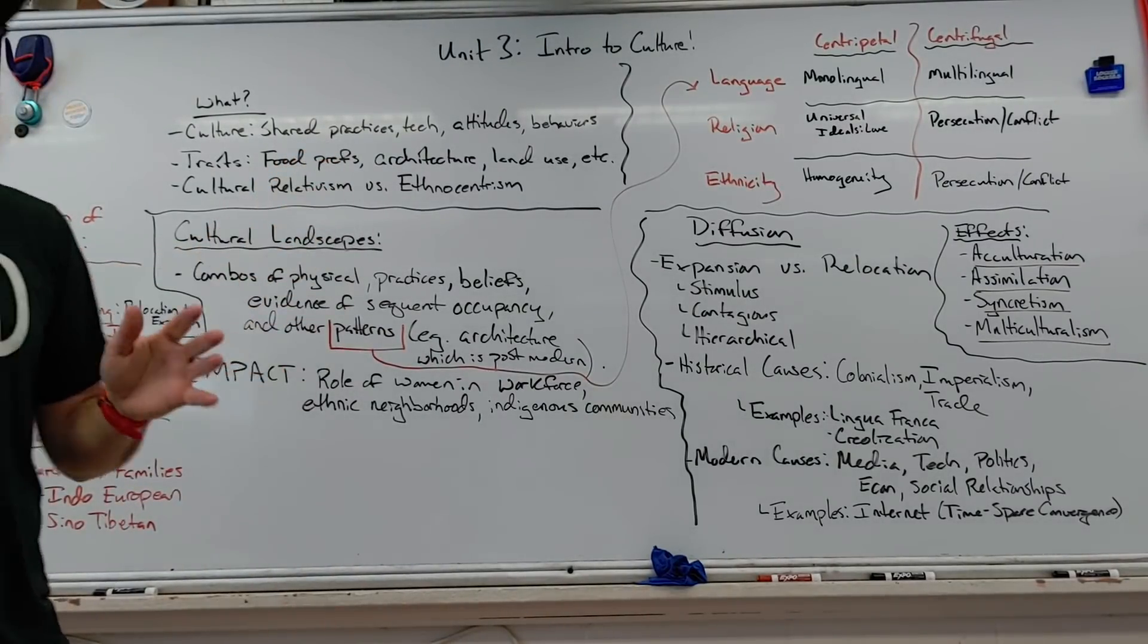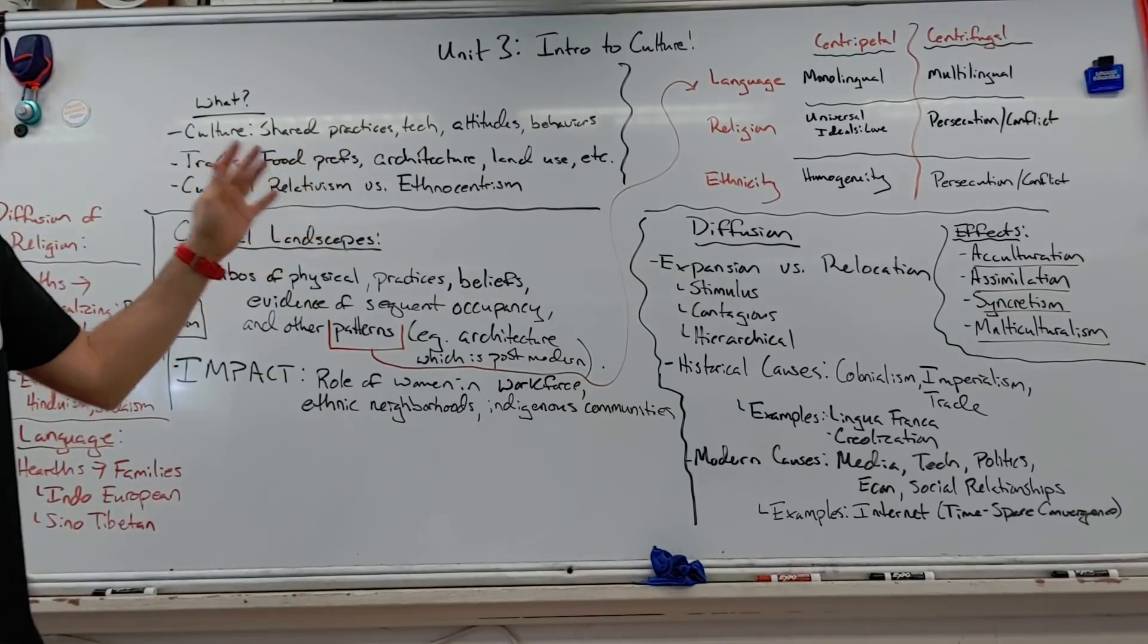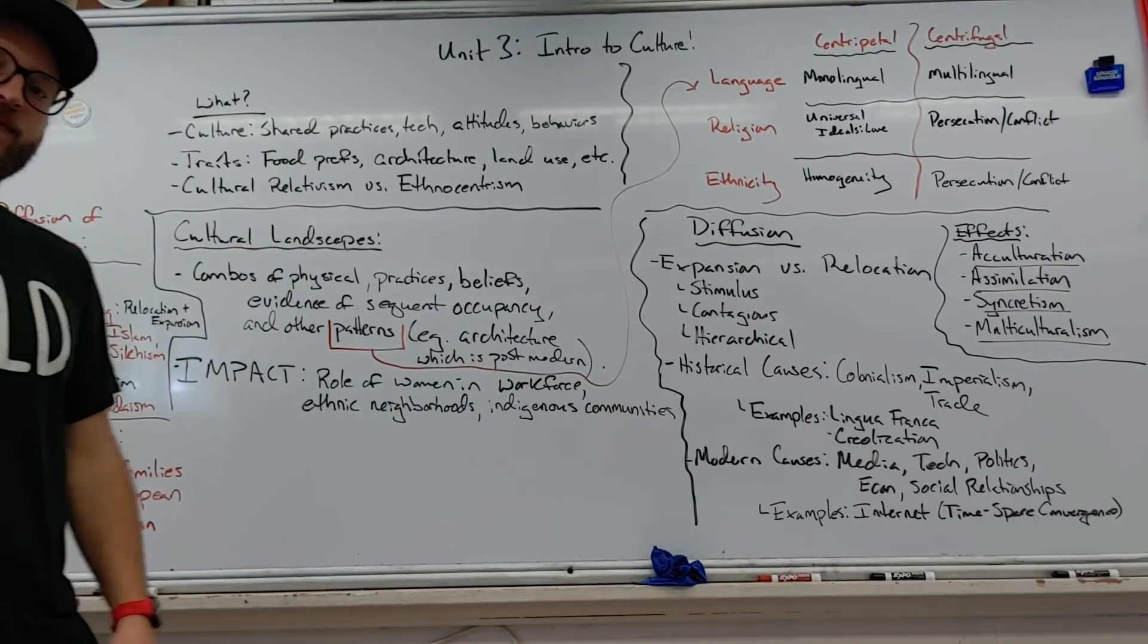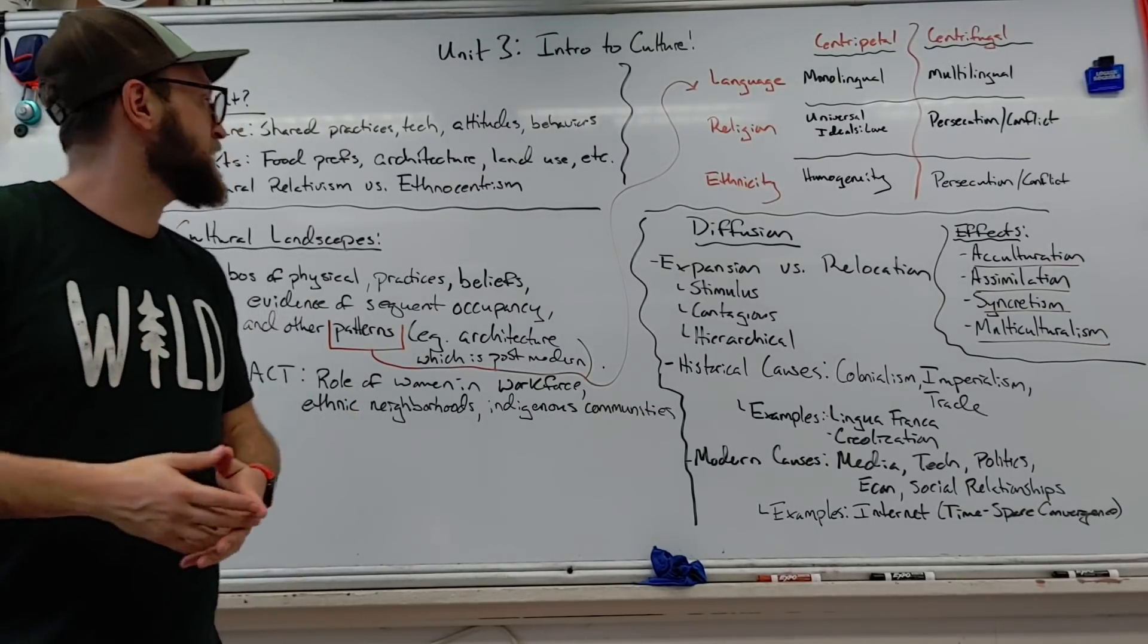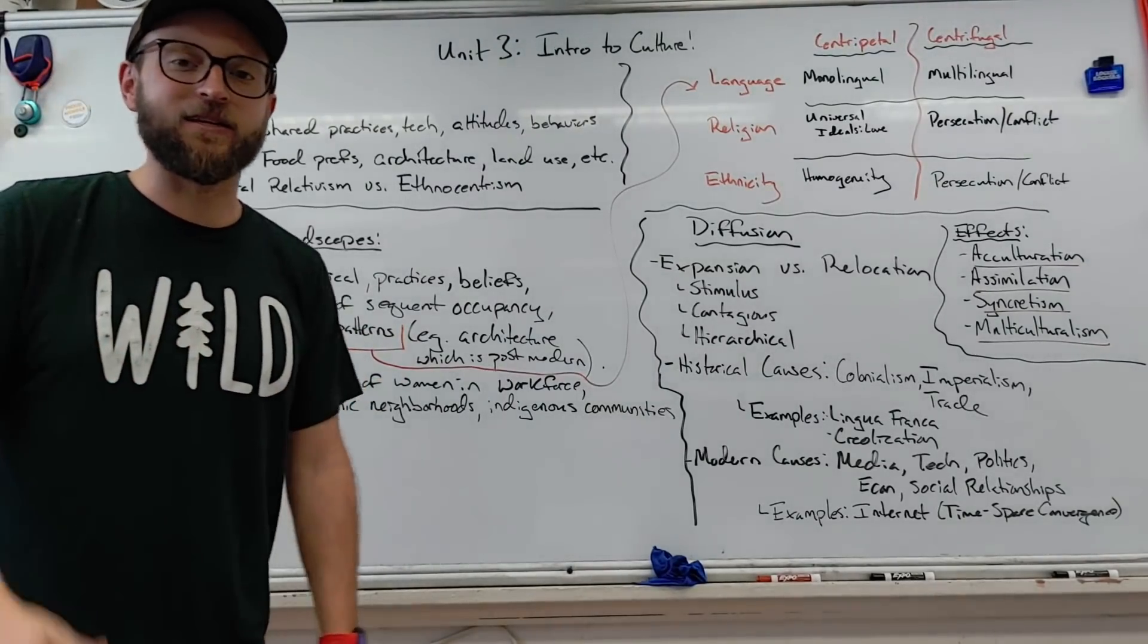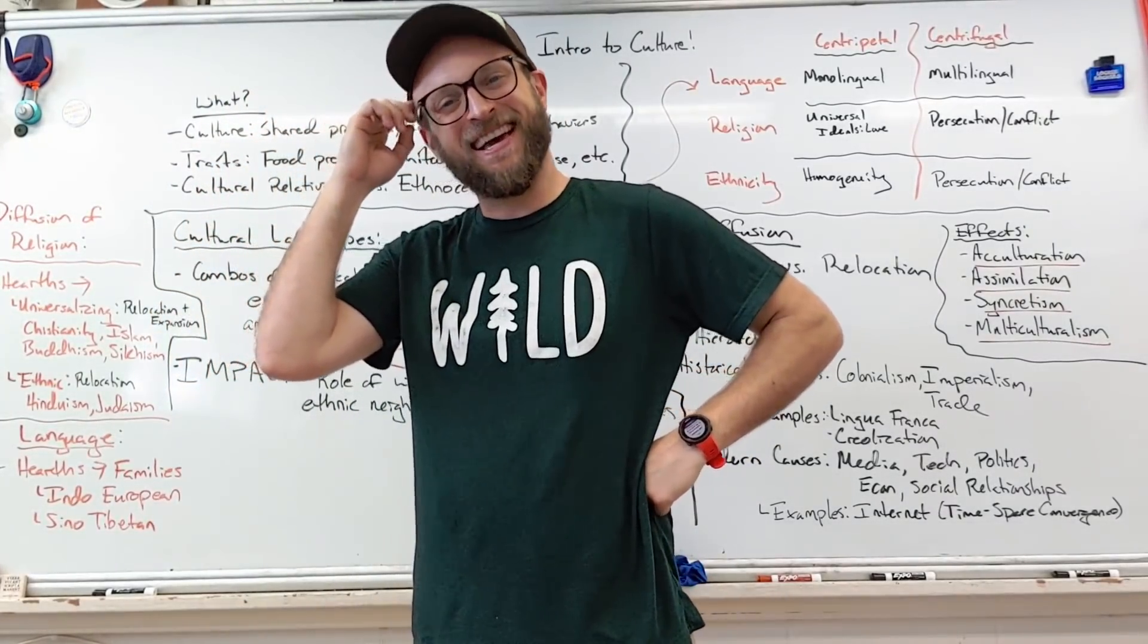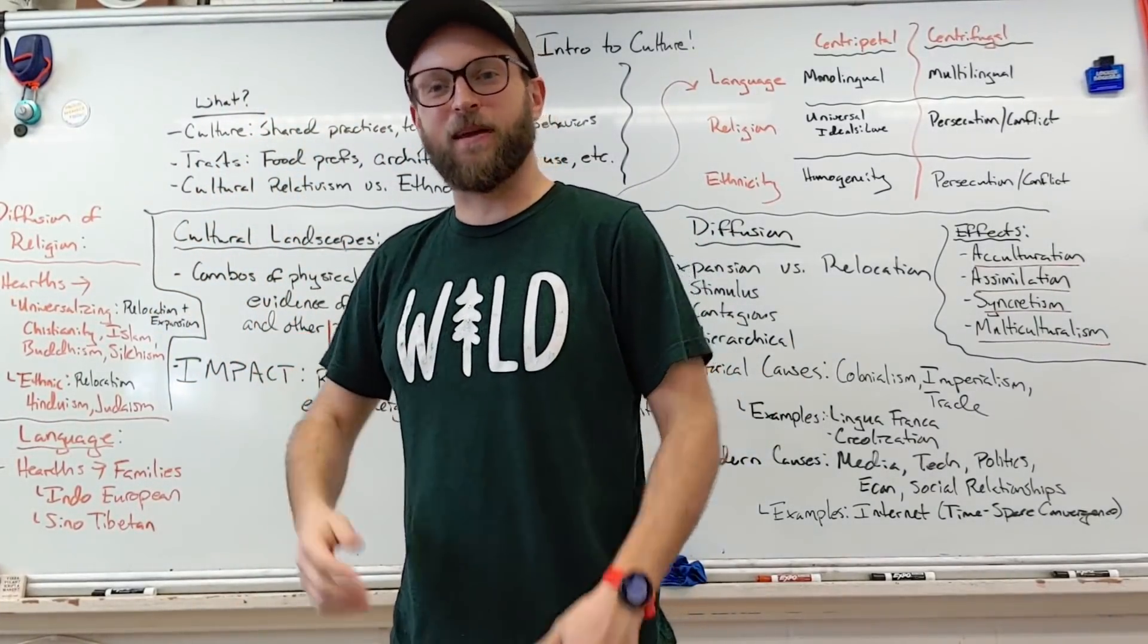Unit 3 is about culture. It begins with what is culture? It turns out it's just the shared practices, technology, attitudes, and behaviors of a group of people. The traits that we manifest this culture in are our food preferences, our beliefs, our architecture, and our land use. If your house happens to be on that sinkhole like mine does, then obviously you don't mind the swamp life.